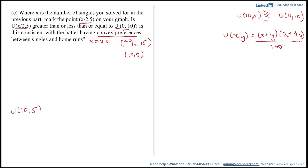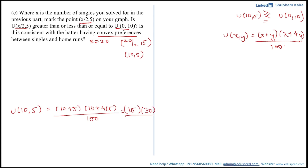Let's evaluate the utility at the two consumption bundles. First, at 10 comma 5, where x = 10 and y = 5: substituting gives (10 + 5)(10 + 4×5) / 100 = 15 × 30 / 100 = 4.5.